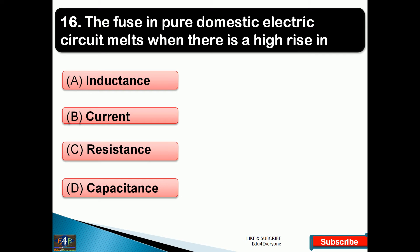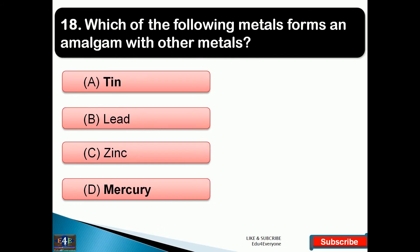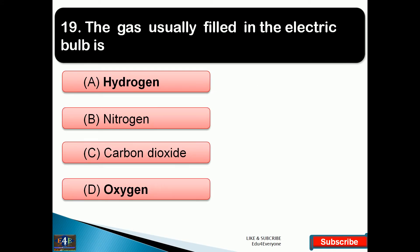Brass gets discolored in air because of the presence of which of the following gases? The right answer is option B, that is hydrogen sulfide. Which of the following metals forms an amalgam with other metals? The right answer is option D, that is mercury. The gas usually filled in the electric bulb is — the right answer is option B, that is nitrogen.